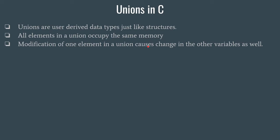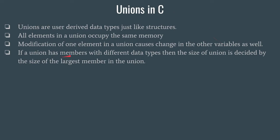Modification of one element in a union causes a change in the other variables as well. Now, if all elements in a union occupy the same memory, what will be the size of the memory designated to a union? The size given to a union is the size of the largest member variable present inside it. If a union has members with different data types, the size of the union is decided by the size of the largest member.